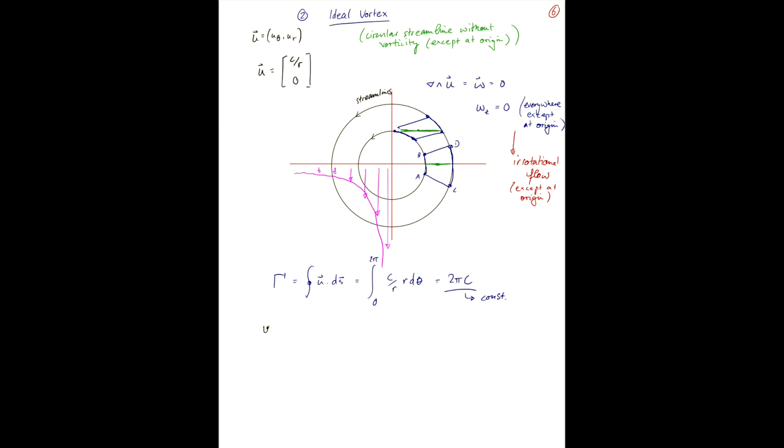Let's consider the limit of the origin. So let's take omega z as r goes to 0. So in this case, the limit of r goes to 0, 1 over the area, omega z d area. And this is from the definition of vorticity as the limit of circulation over a small area. So here, we have this as the limit of r going to 0, 1 over pi r squared, u dot ds.